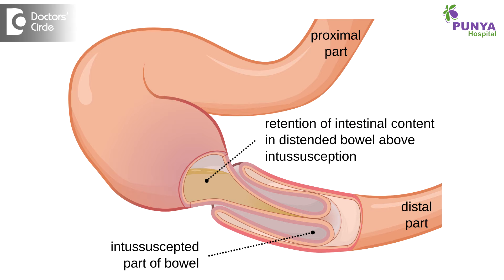What I am trying to tell you is, the intestine proximal — that is the earlier part of the intestine — will try to get into the lumen of the distal part, that is the later part of the intestine. That is called intersusception. This is a surgical emergency.